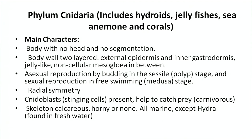What are the main characteristics of this phylum? It has a body with no head and no segmentation. The body wall is two-layered — external epidermis and inner gastrodermis — with a jelly-like non-cellular mesoglea in between. It functions as a hydrostatic skeleton. Cnidoblasts or stinging cells are present, which help it to catch prey because it is carnivorous in nature. The skeleton is calcareous, horny, or sometimes absent.